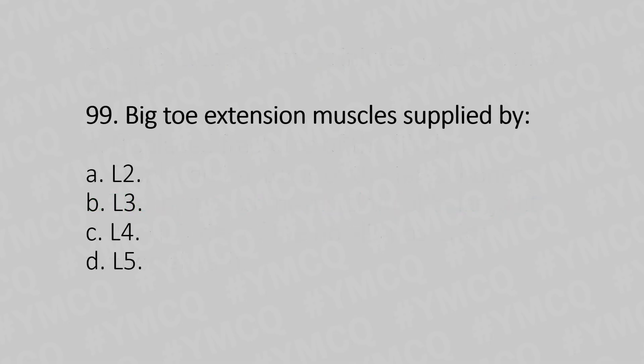Let's move to question number 99. Big toe extension muscles are supplied by: Option A, L2. Option B, L3. Option C, L4. Option D, L5. The answer is Option D, L5.